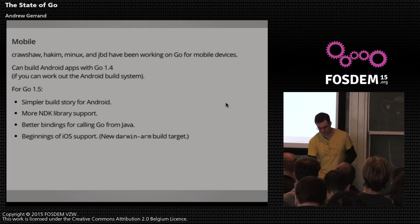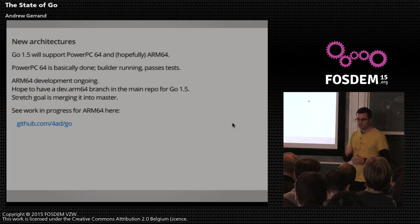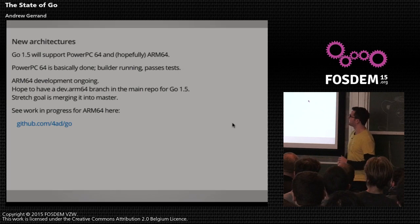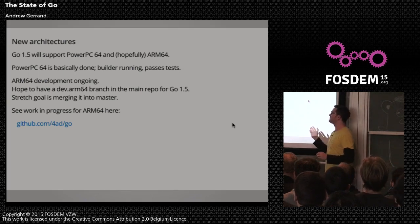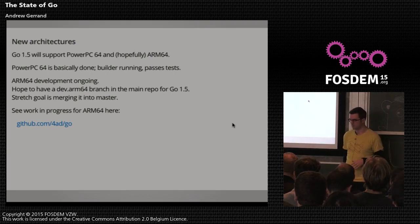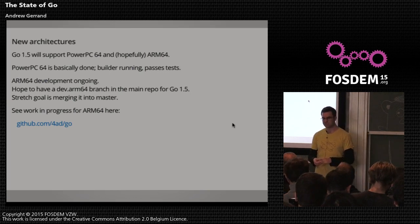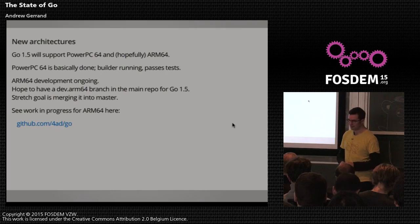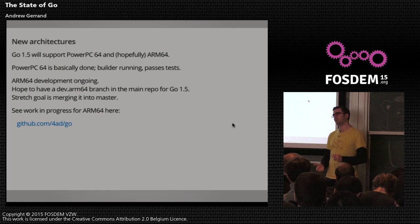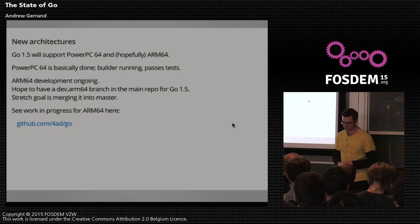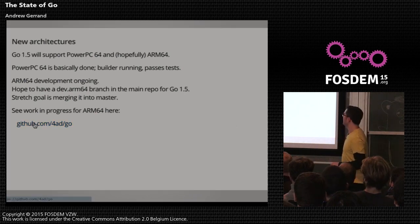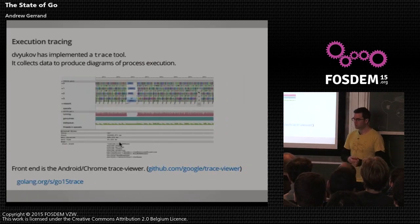Also related to mobile: some new architectures. PowerPC 64 is basically done — there's a builder running and it passes tests, so that will probably be in 1.5. ARM64 is in the works, with contributors from ARM working hard on it. ARM64 is important for iOS development because of 64-bit processes in newer Apple phones — there's a work in progress visible in the GitHub repo. There's a stretch goal to have an ARM64 branch in the main repo by 1.5.